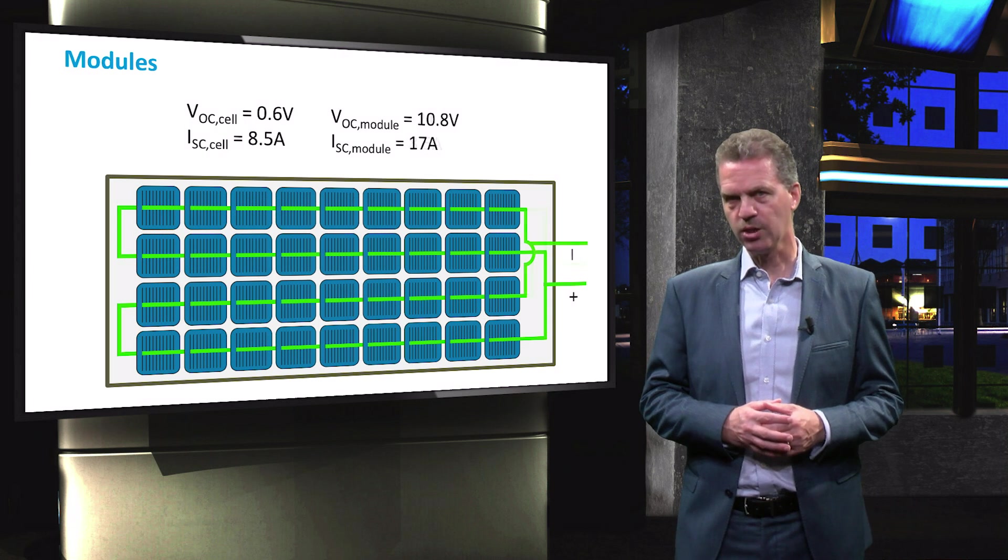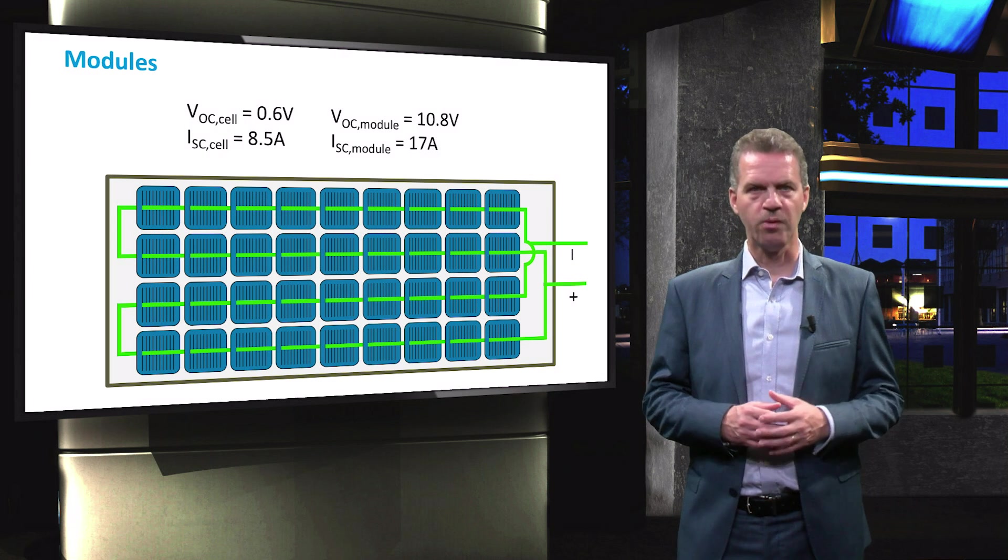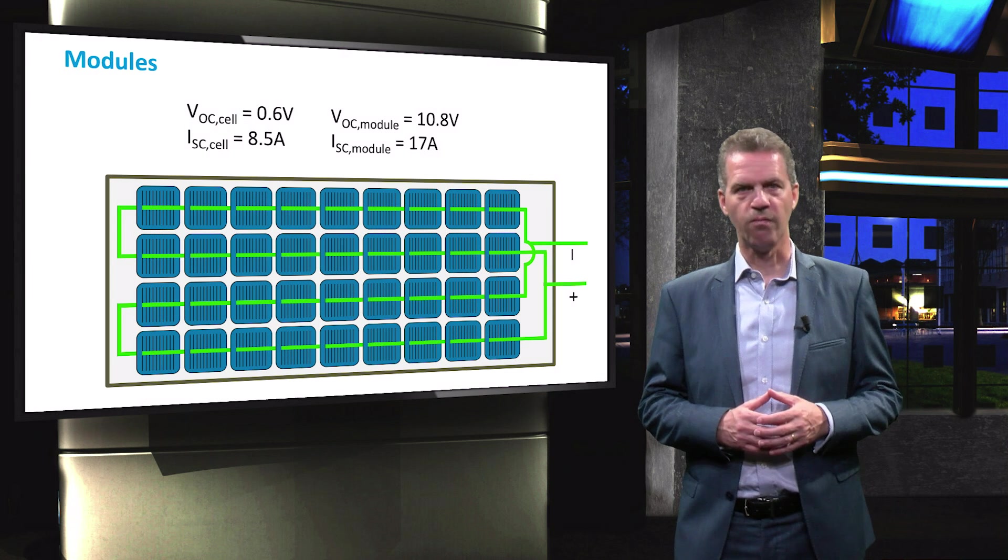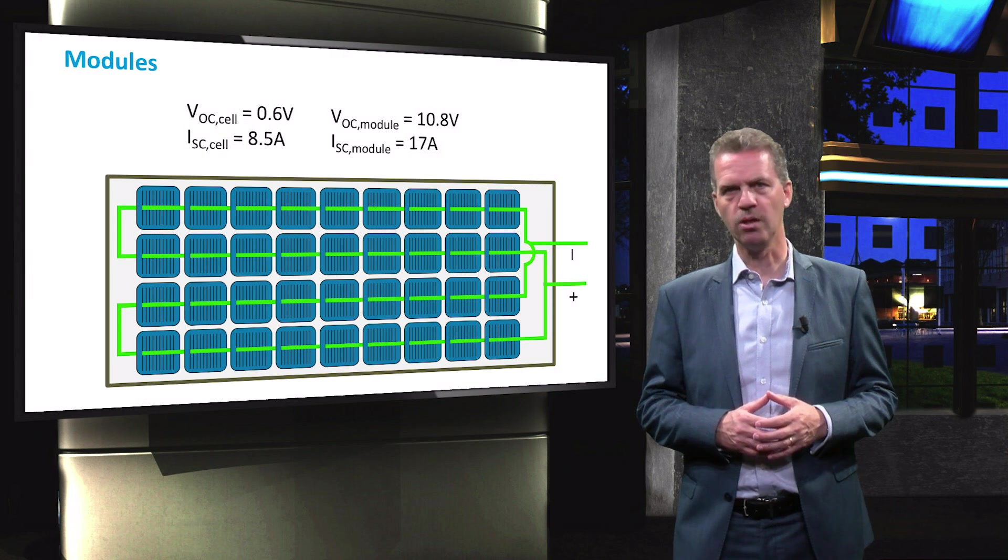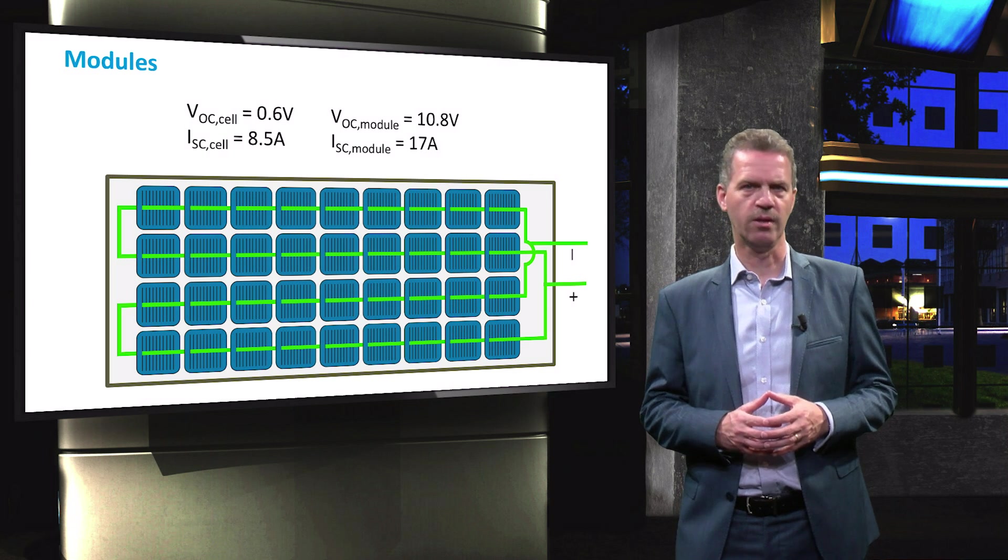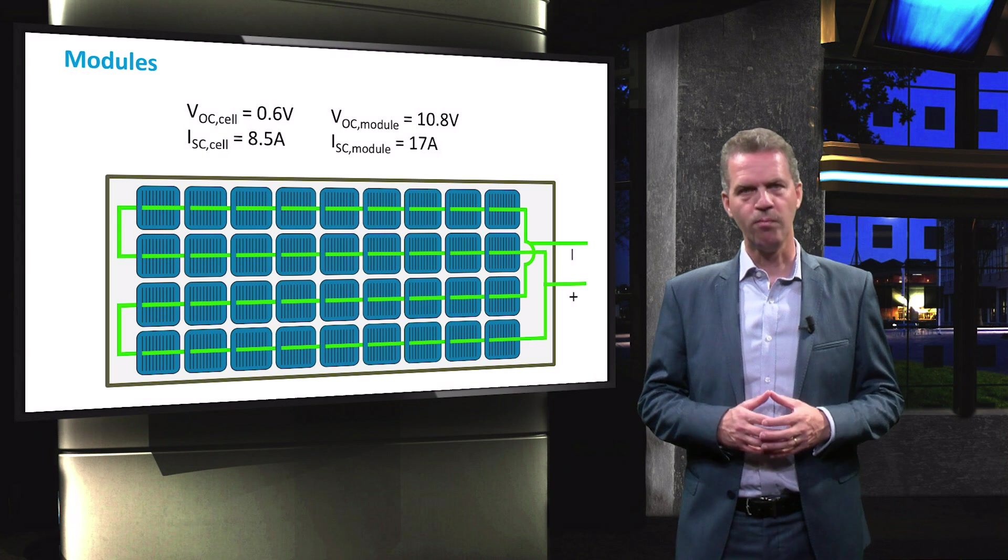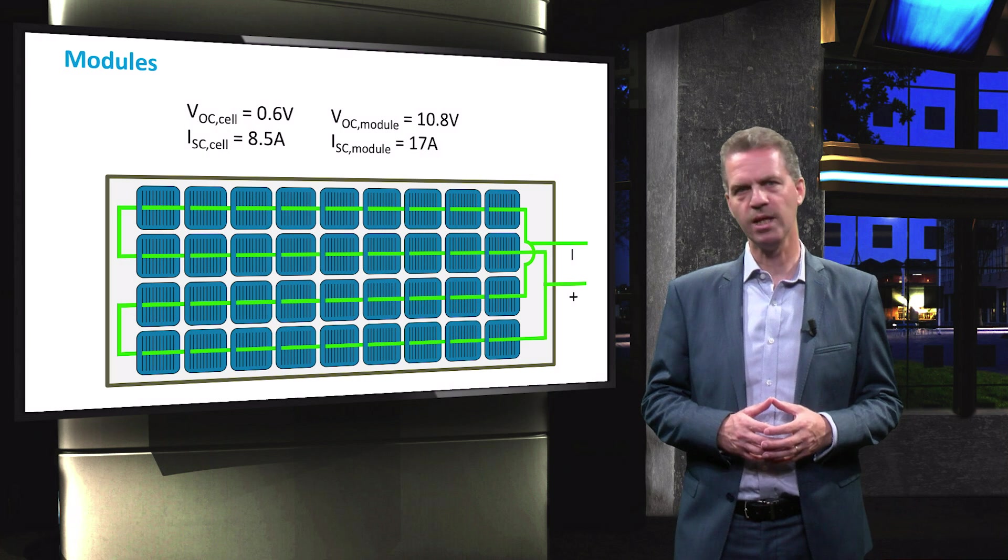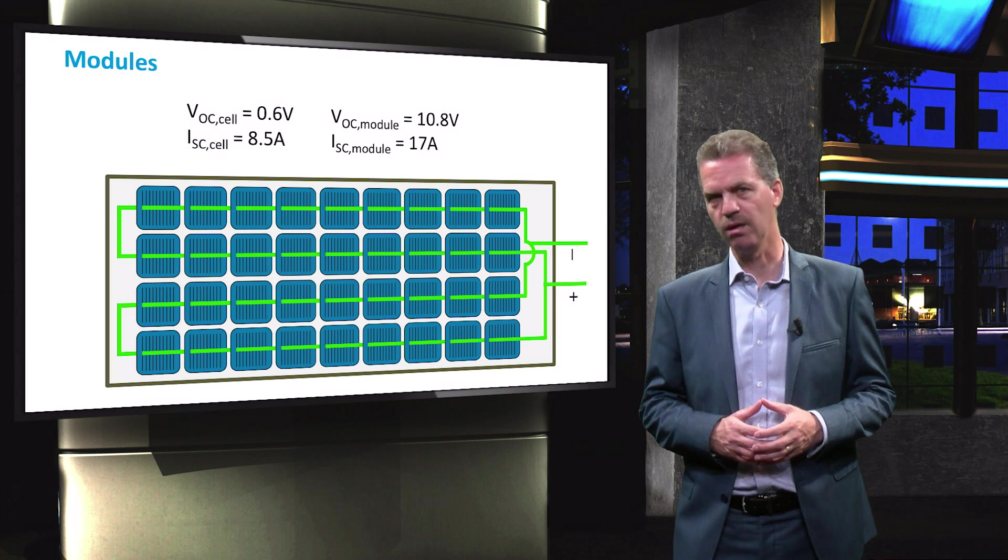If we would rearrange the connection of this module, we can obtain a different current and voltage output. Two strings of 18 cells will result in a short-circuit current of 2 times that of a single cell, thus 17A. The open-circuit voltage of the module would then be 18 times that of a single cell, which is 10.8V.